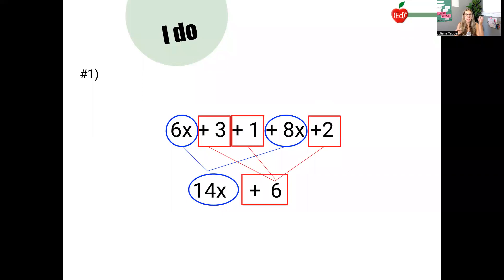And this is a blue circle and a red square. This is just like having blue M&Ms and red starbursts. They stay separate. I do not combine this. So my final answer is 14x plus 6.